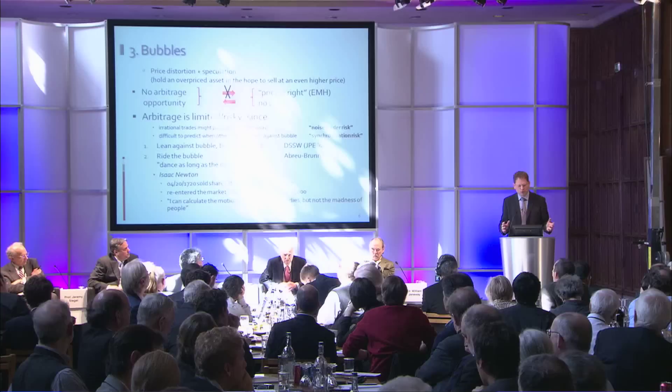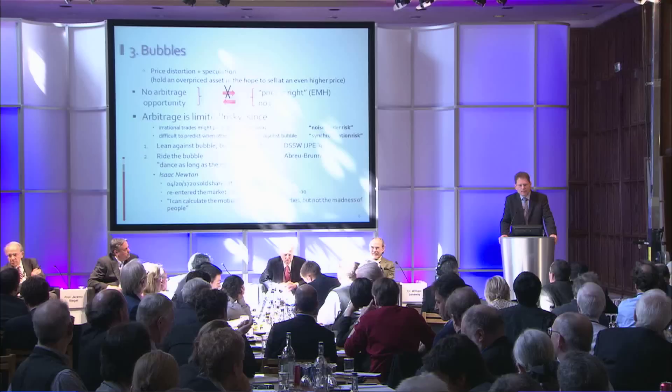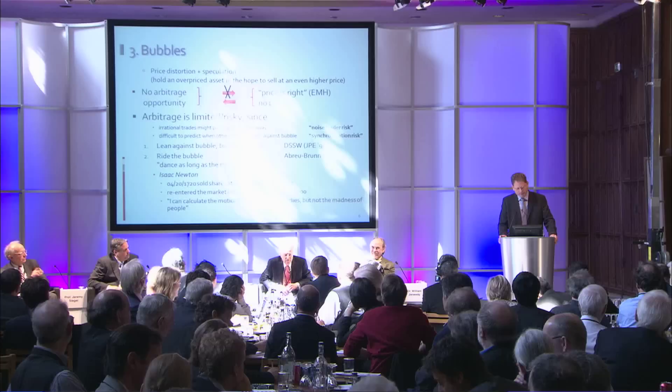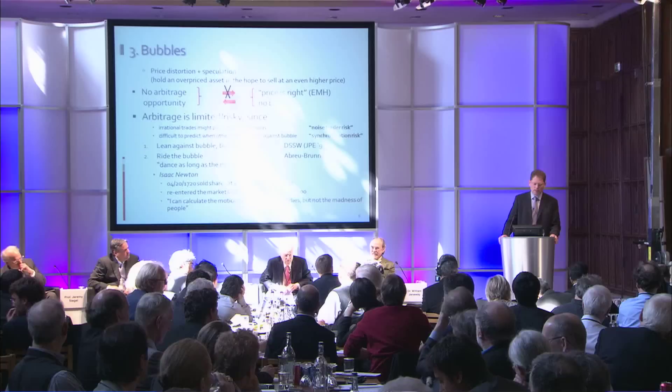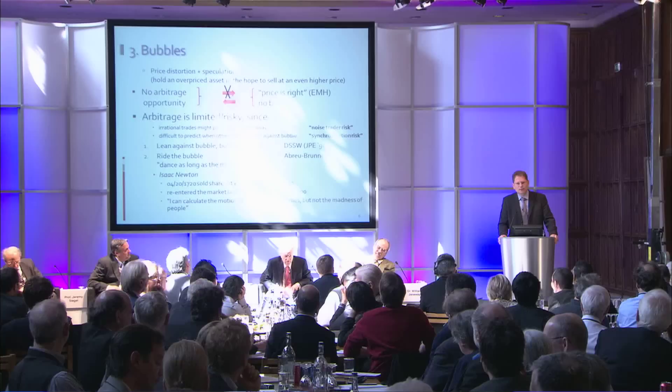There are very famous, very rational people who were riding the bubble — and one of them was Isaac Newton, just mentioned here in Cambridge. He was riding the South Sea bubble. In April 1720, he sold South Sea stocks for £7,000 after making £3,500 profit. But then he saw the stock price going up and up and re-entered the market, and at the end he lost £20,000. Frustrated with his experience, he concluded: 'I can calculate the motions of the heavenly bodies, but not the madness of people.'